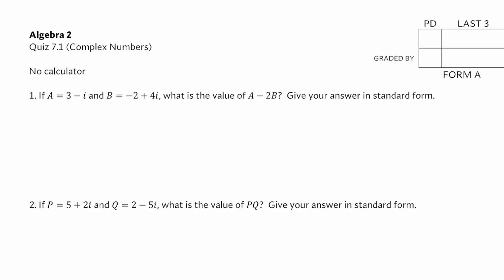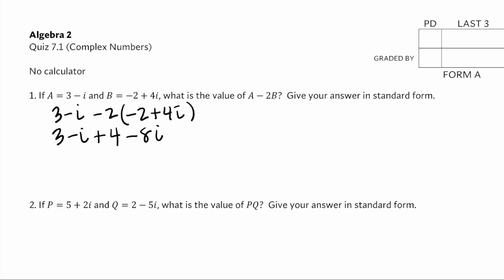We're going to start by finding the value of a minus 2b. So a minus 2b is going to be 3 minus i, minus 2 times negative 2 plus 4i. We're just going to do some distribution. Negative 2 times negative 2 is positive 4, and negative 2 times 4i would be negative 8i. We'll combine like terms and get 7 minus 9i.